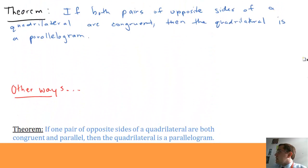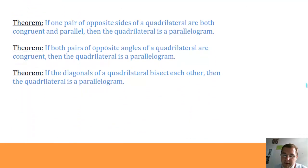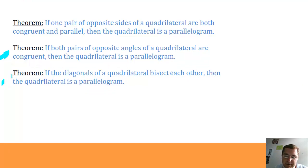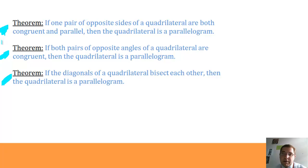So that's four ways to show a quadrilateral is a parallelogram: if both pairs of opposite sides are congruent; if both pairs of opposite angles are congruent; if the diagonals bisect each other; or if just one pair of opposite sides is both congruent and parallel. We will prove some of those in class.